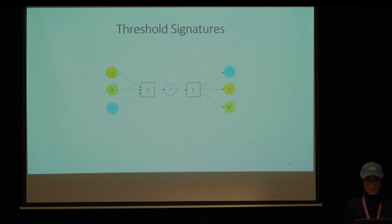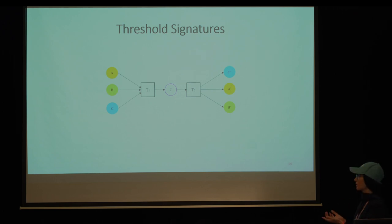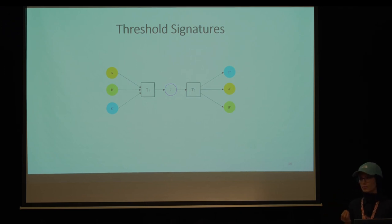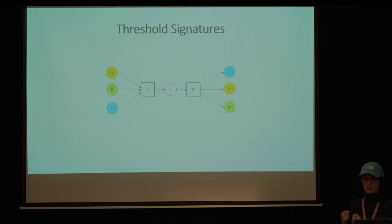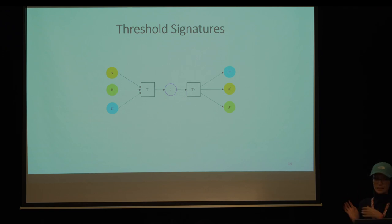The last category is threshold signatures. Threshold signatures use a joint signature that can be signed by a specific threshold of users. To enhance privacy, all users first create address J on a threshold basis, forward their coins to address J, and then create a second transaction to forward the coins to their desired destination addresses.